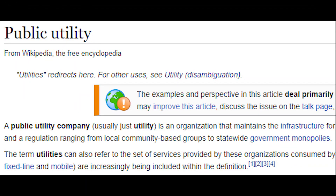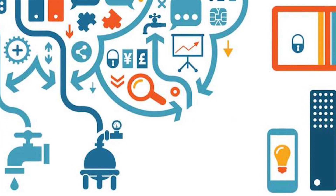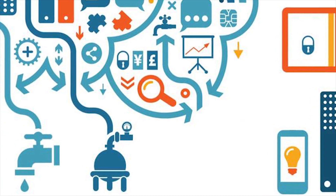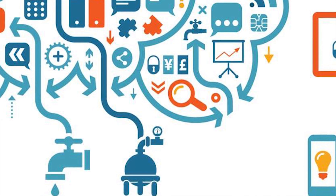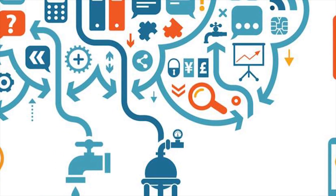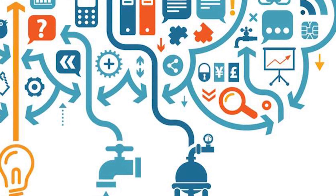A public utility company, usually just called a utility, is an organization that maintains the infrastructure for a public service, often also providing a service using that infrastructure. Public utilities are subject to forms of public control and regulation, ranging from local community-based groups to statewide government monopolies.